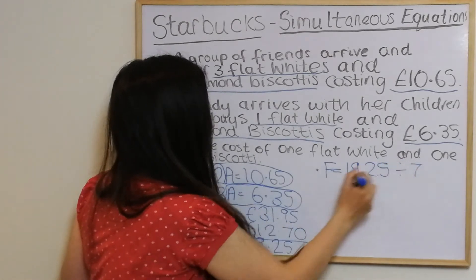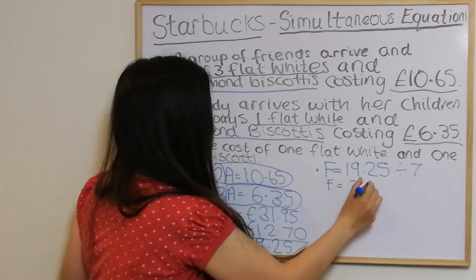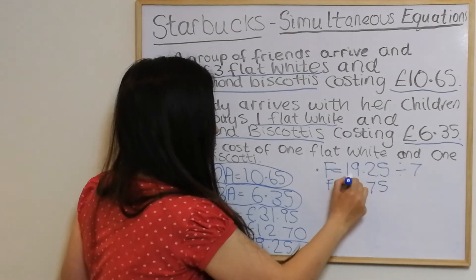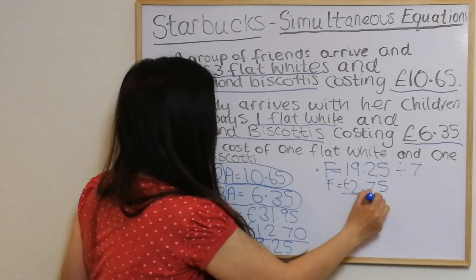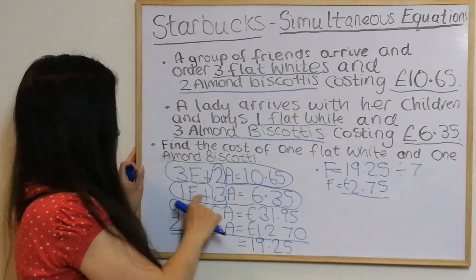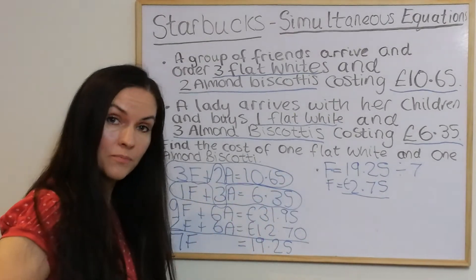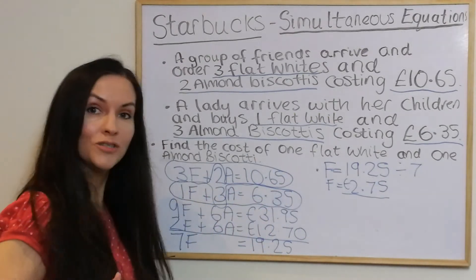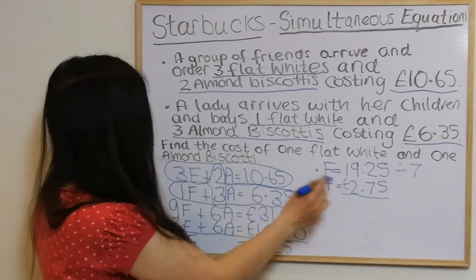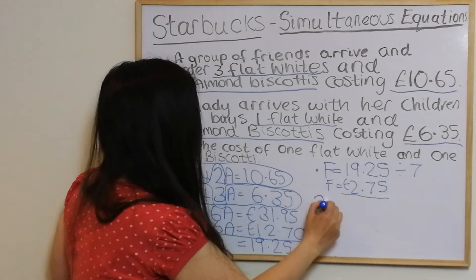by seven, which gives us two pounds seventy-five. That's the cost of one flat white. We can then substitute that back in to work out the cost of one almond biscotti, so 2.75 plus 3 almond biscottis equals 6.35.